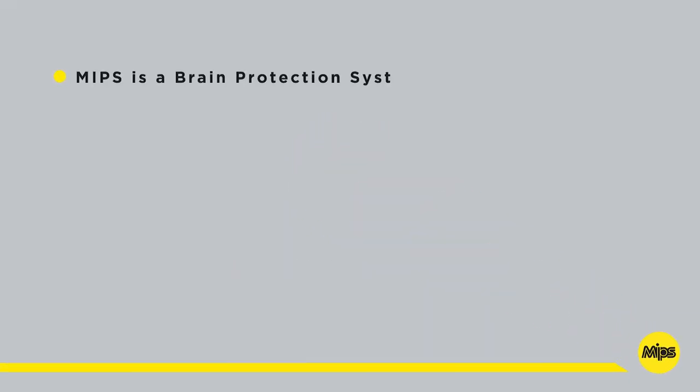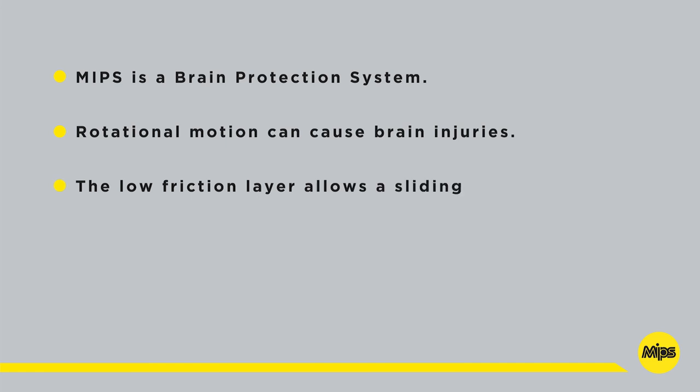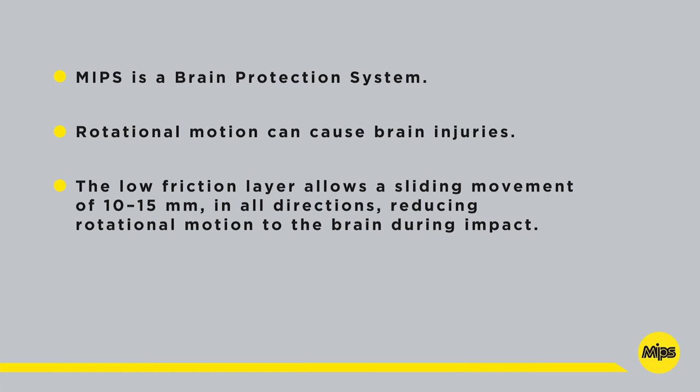MIPS is a brain protection system. Rotational motion can cause brain injuries. The low friction layer allows a sliding movement of 10 to 15 millimeters in all directions, reducing rotational motion to the brain during impact. MIPS adds protection.